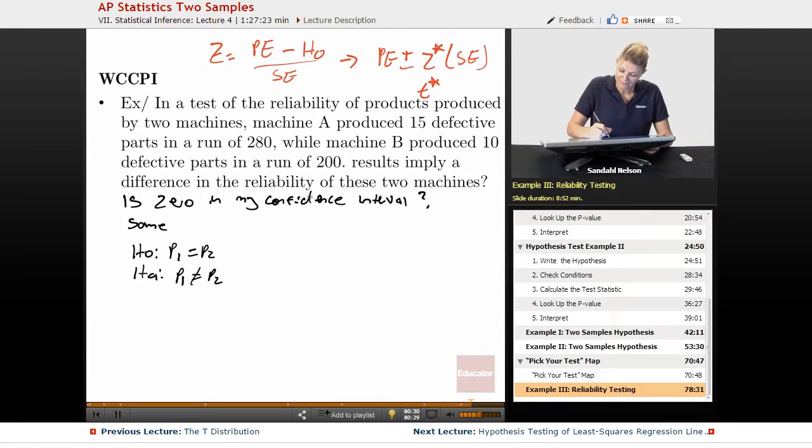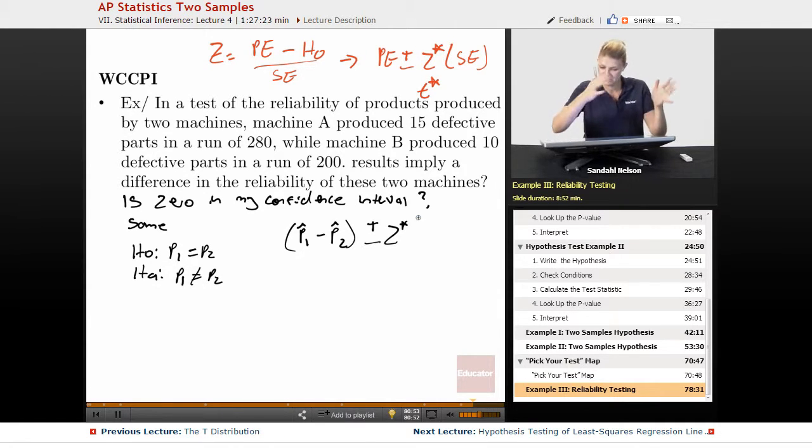So our point estimate, just like in the hypothesis test, would be p hat 1 minus p hat 2 plus or minus, we know we're dealing with a proportion, so it has to be a z star, times standard error. So this is the one place that it's different, and it's only different in the case of proportions. If we were dealing with means, we just stick the standard error from the hypothesis test right over here.